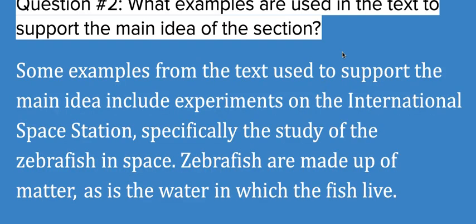Question two: What examples are used in the text to support the main idea of the section? So here's where we can talk now about the zebrafish and the other examples of matter with the grapefruit and the football field, those examples. We say that some examples from the text used to support the main idea include experiments on the International Space Station, specifically the study of the zebrafish in space. The zebrafish are made up of matter, as is the water in which the fish live. So we see that matter is being used in real life as the zebrafish, in the water and the container that they're in. And then we see that those examples of that experiment, what are they being tested on? What are we trying to find out? How are the scientists going about that study?